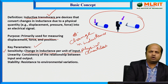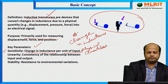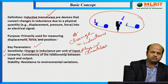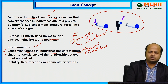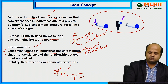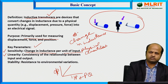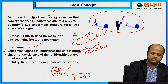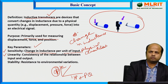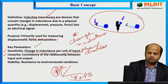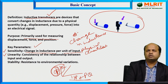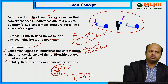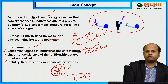The sensitivity of an inductive transducer must be very high. Second is linearity — the inductive transducer must be highly linear. There should be a perfect linear relationship between the input physical quantities — displacement, force, position — and the output, which is the change in inductance. Third, it should be highly stable and should not be impacted by any environmental conditions.